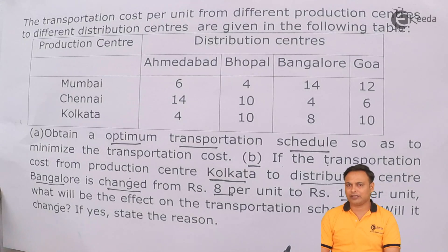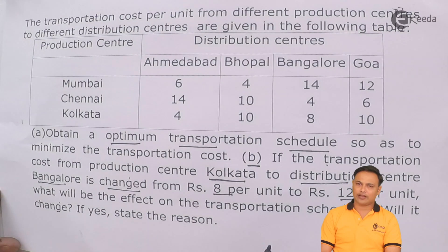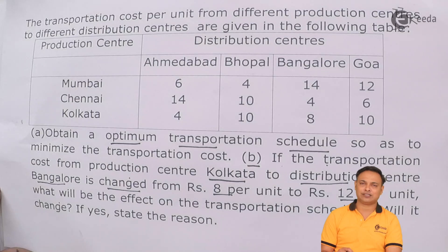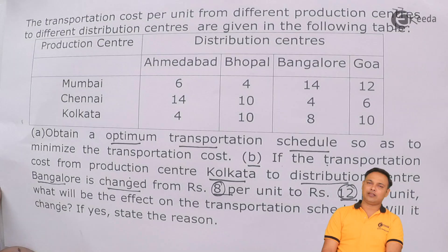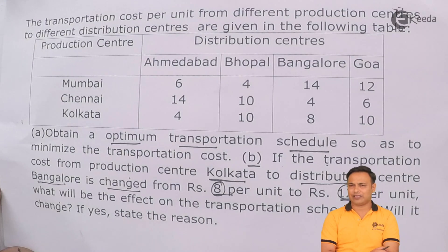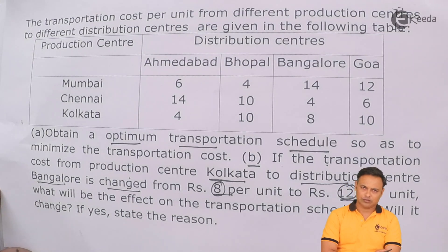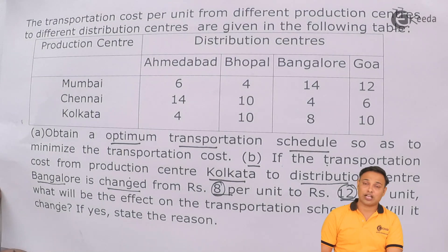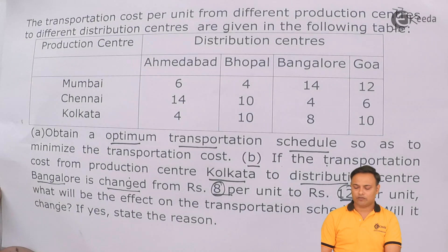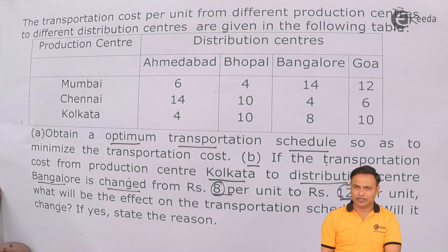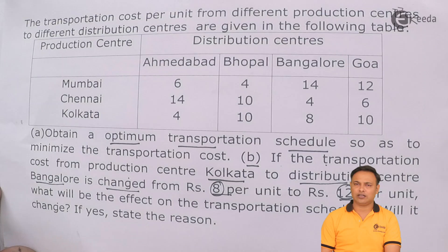This is a problem based on transportation sensitivity. We have already obtained the answer of Part A, and now the question asks: if the cost from Kolkata to Bangalore changes from 8 rupees to 12 rupees, will there be a change in the final answer? That's the question. Let's see how to solve this by referring to the final solution of Part A.